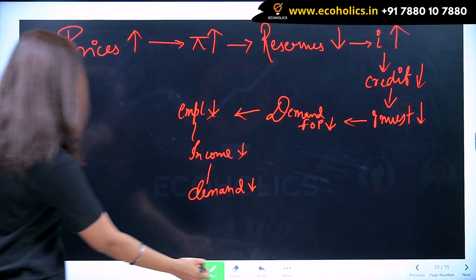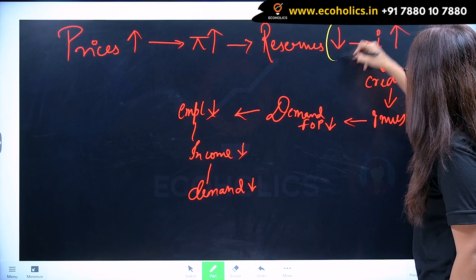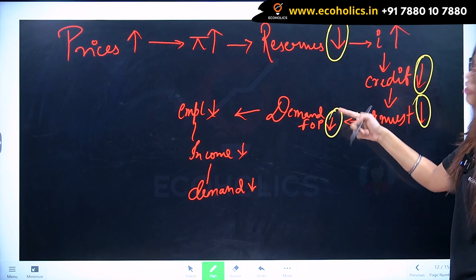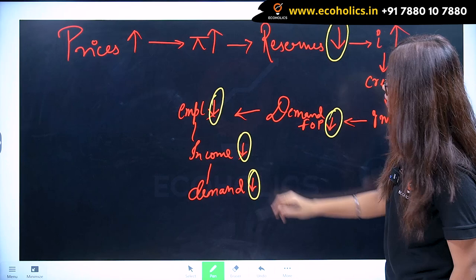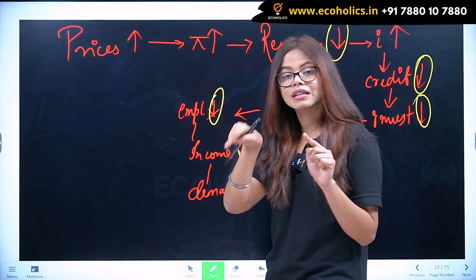Here the reserves were lower, credit was lower, investment was lower, demand for the factor of production was lower, employment was lower, income was lower, demand in the economy also fell. This is the phase of recession.